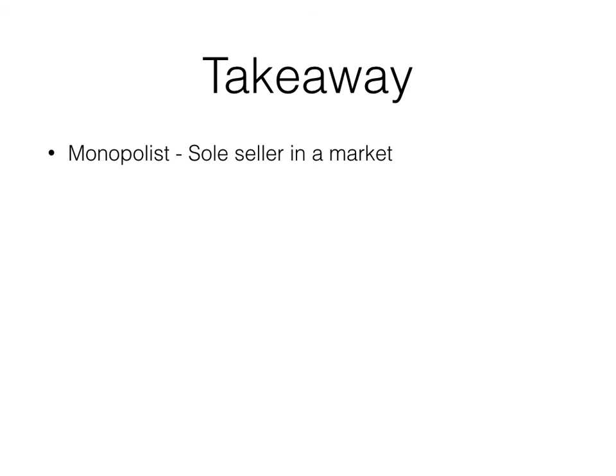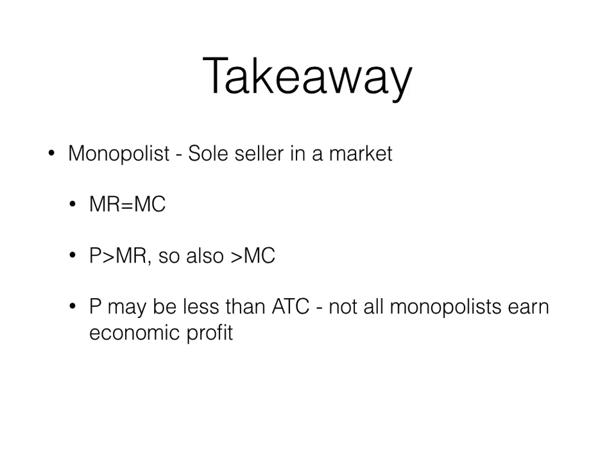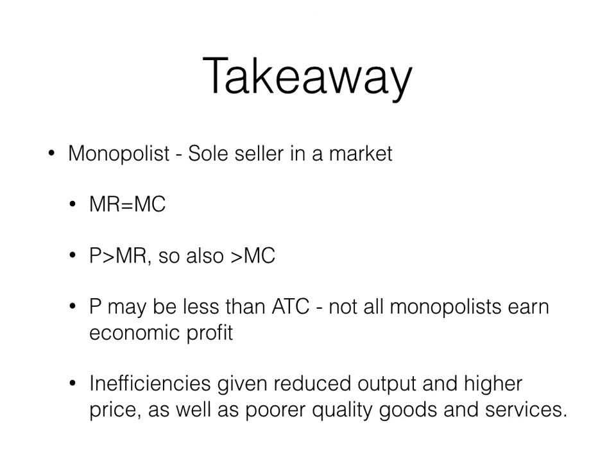What's the takeaway from this? First, a monopolist is a sole seller in a market. It will, just like a perfectly competitive firm, set marginal revenue equal to marginal cost. However, price is greater than marginal revenue, so price will also be greater than marginal cost, and this leads to inefficiencies. Price also may be less than average total cost. Not all monopolists earn economic profit, but price in this market tends not to equal average total cost. The inefficiencies are given due to the reduced output and the higher prices, as well as the poorer quality goods and services that monopolists tend to produce because they don't have people competing against them to better serve their customers.